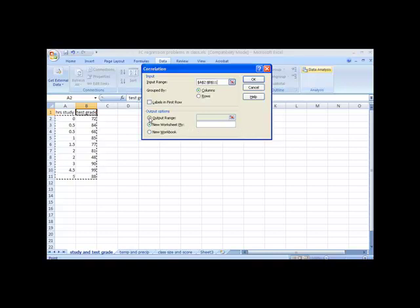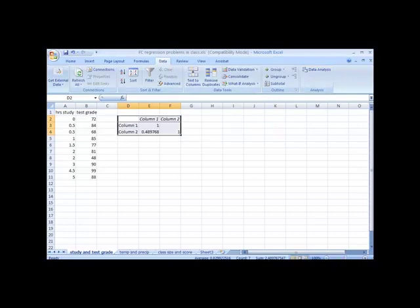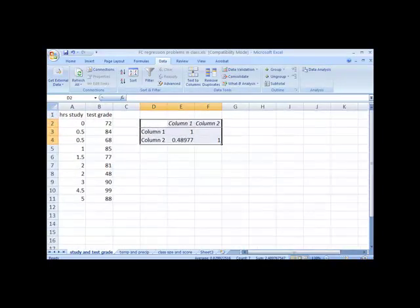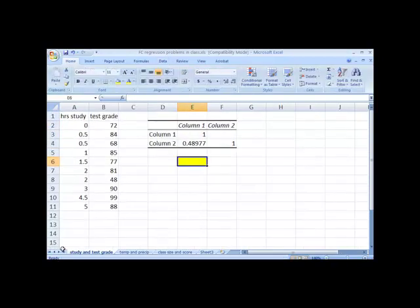I'm going to put it on the same sheet so you can see it better. So I'm going to click Output Range, grab a cell to put it in, and I have a value, .48977. That means that R, the measure of the relationship, is .48977.